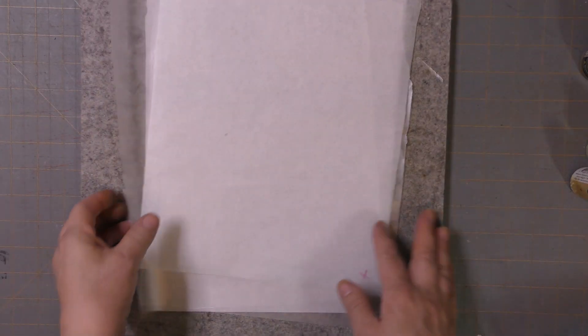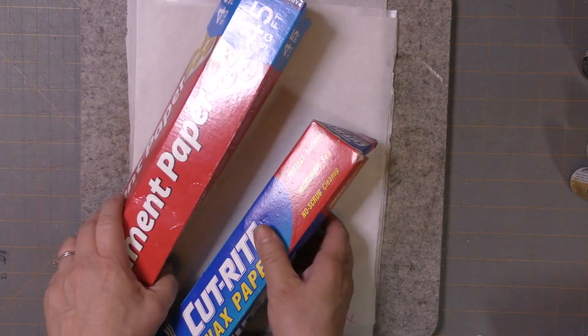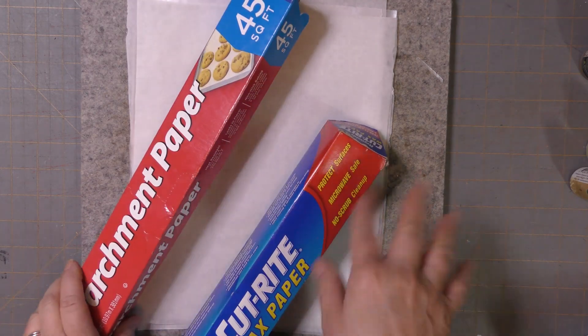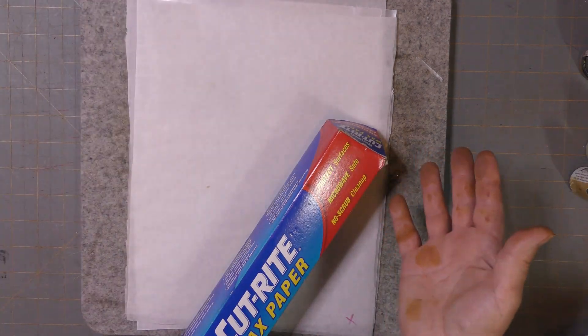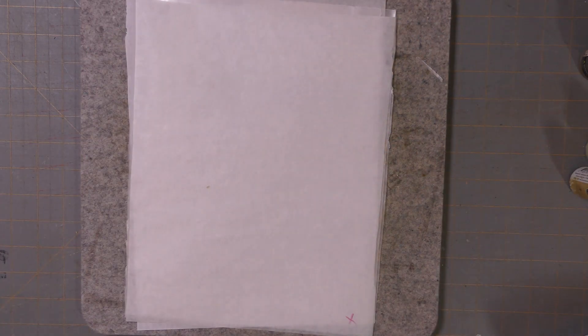The next thing we're going to need are our other supplies that we already mentioned. We'll need two sheets of parchment paper the same size as your paper, roughly, and two sheets of wax paper roughly the same size as your paper.